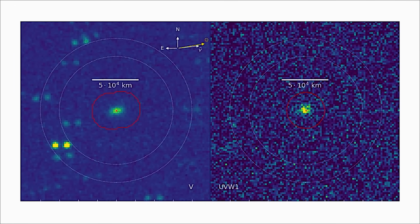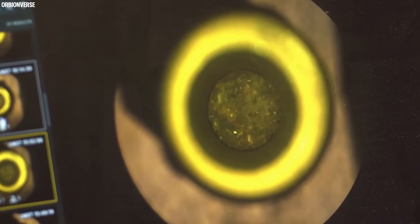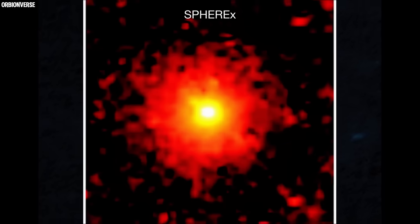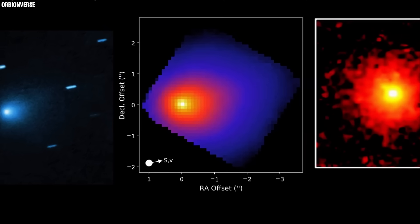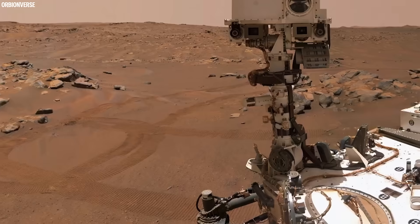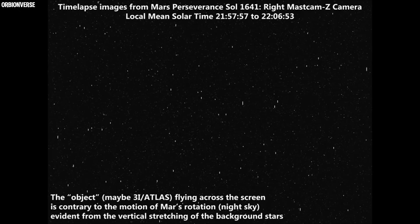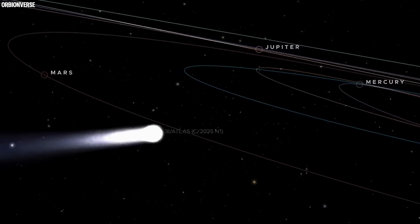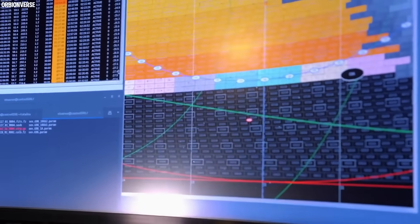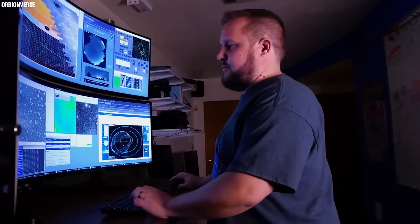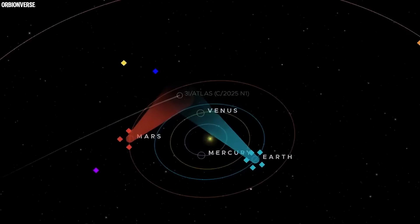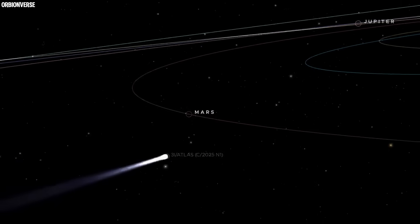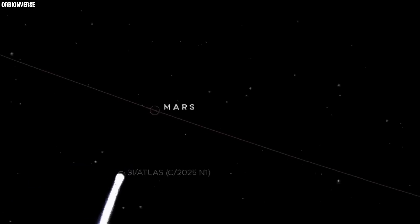Let's step into the science for a moment. Perseverance's nav cam isn't built to take glossy, high-resolution color images like Hubble or James Webb. It's designed for function, not beauty, for guiding the rover safely across Mars. Each pixel in those grayscale frames corresponds to about 68 arc seconds of the sky. And at the time the image was taken, 3I/ATLAS was approximately 38 million kilometers away from Mars. That means each pixel represented a slice of sky about 12,500 kilometers across at that distance. So when the comet appeared four times longer than it was wide, that bright stripe represented a projected length of roughly 50,000 kilometers.